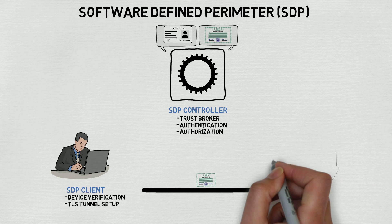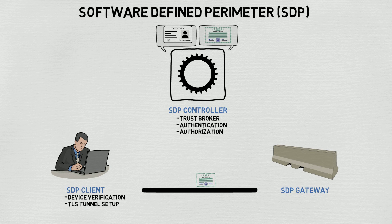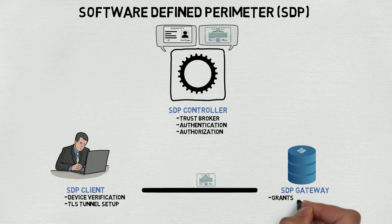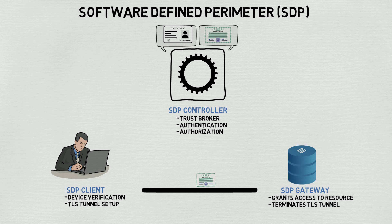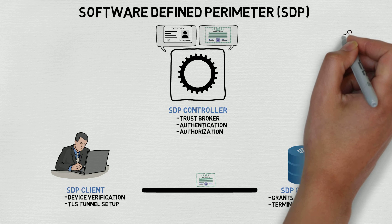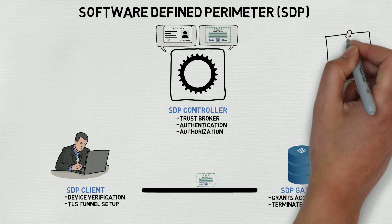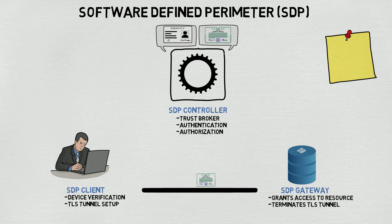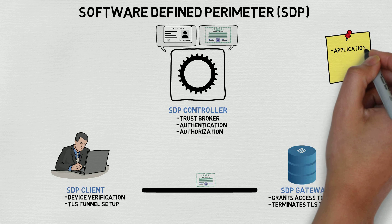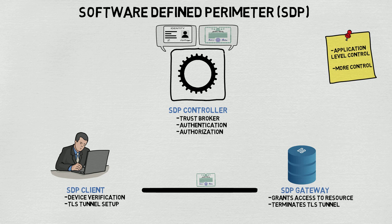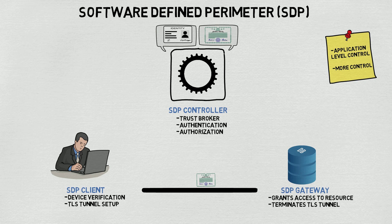The third component of SDP is a gateway. This grants access to the previously private and unknown resource, and is also the termination point for the TLS connection between the client. Once a gateway confirms with the controller that the client can access a given resource, the connection to the application is allowed. The main difference between an SDP connection and, say, a NAC solution is that NAC usually stops at layer 2. The SDP controller and gateway operate all the way up through layer 7. This means that a user can be authorized to access application A on server 1 but not applications B or C running on that same server. In SDP, an unauthorized user wouldn't even be able to see that there are any other applications running on that server without being authorized first. By comparison, an unauthorized user in a NAC design can see other things on the network, which doesn't prevent lateral movement.